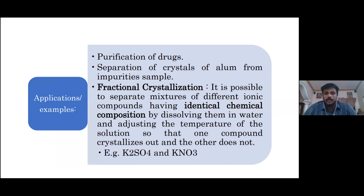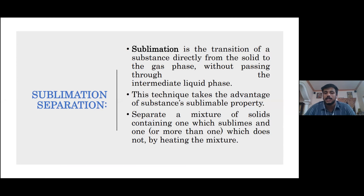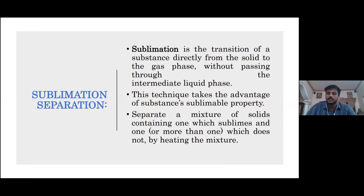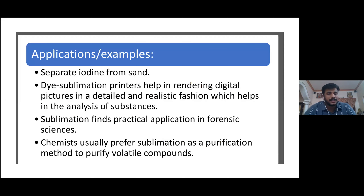The next method is sublimation. Sublimation is the transition of a substance directly from the solid to the gas phase without passing through the intermediate liquid phase. This technique takes advantage of a substance's sublimation property to separate a mixture of solids containing one which sublimes and one which does not, by heating the mixture. Its major applications are separating iodine from sand, dye sublimation printing for rendering digital pictures in detail, and sublimation finds practical application in forensic sciences. The further topics will be dealt by Alina.